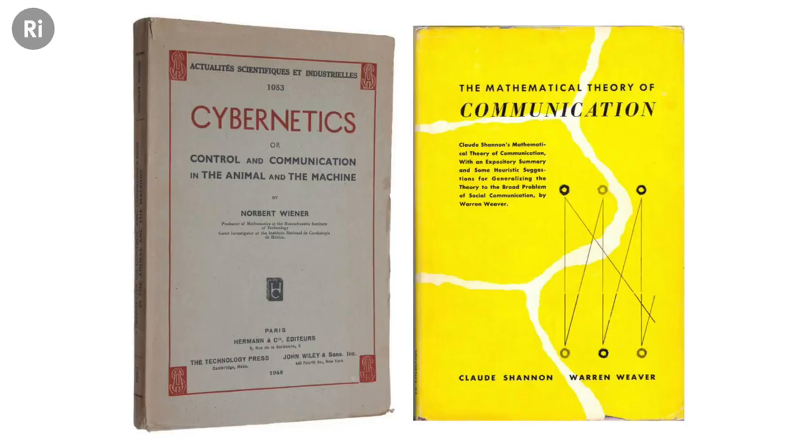They came up with various mathematical concepts during the war, published in various documents, and after the war they both wrote books. Shannon's book is still read today — it's pretty hard going unless you're a mathematician, but his calculations are used by all sorts of biologists today. Ecologists use Shannon's diversity index, and his maths is still used to measure quantities of information. Wiener's book was a massive bestseller.